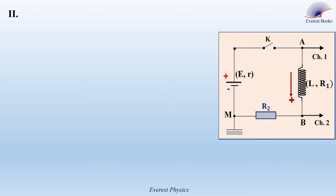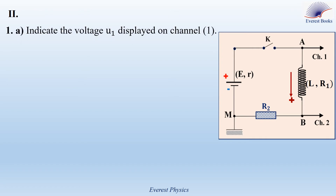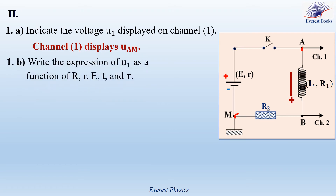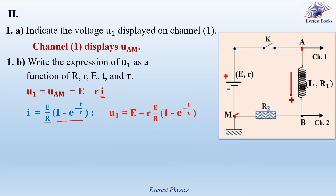Moving to the second part. Part 1A: indicate the voltage U1 displayed on channel 1. The probe of channel 1 is connected to point A and the ground is connected to point M, so channel 1 displays UAM. Part 1B: write the expression of U1 as a function of R, r, E, T, and tau. Since UAM equals U1 equals E minus rI, and we found the expression of the current previously, we replace I in UAM to get E minus r times E over R into 1 minus e to the power minus T over tau.